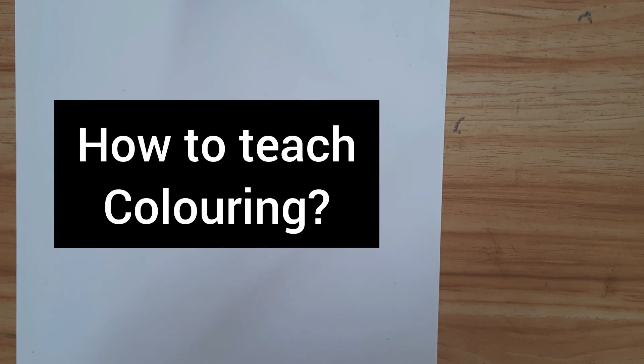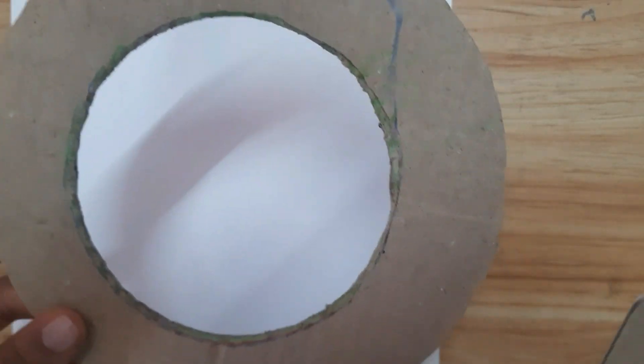Hello everyone, today we will see how to teach coloring to a child. Here I have a few stencils which I have made with cardboard: one is a circle, the other one is a triangle, and a square.